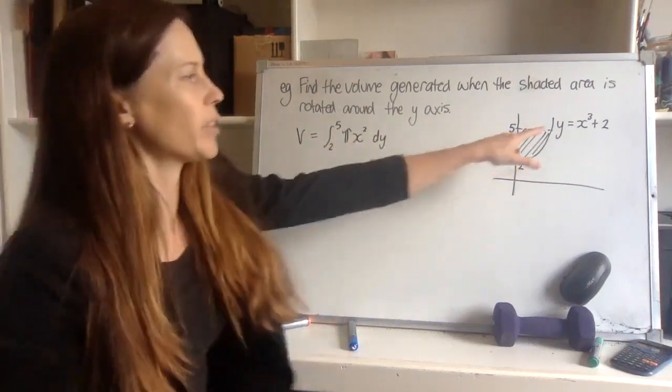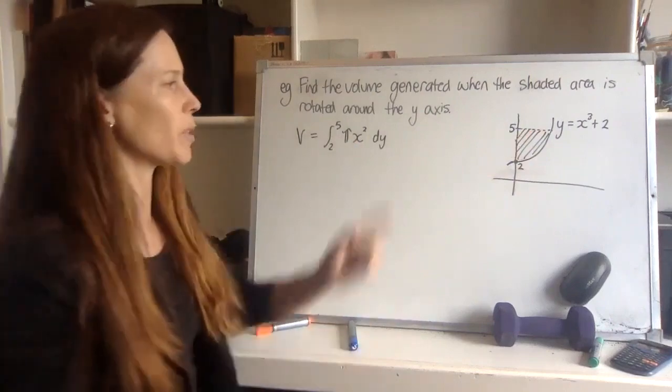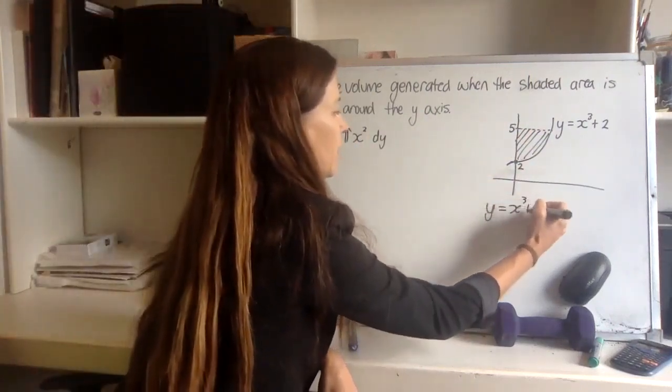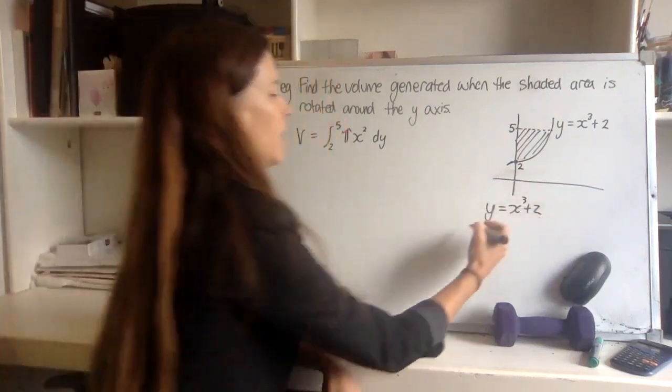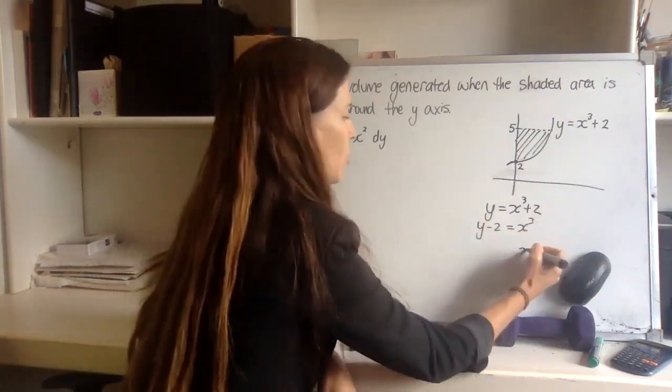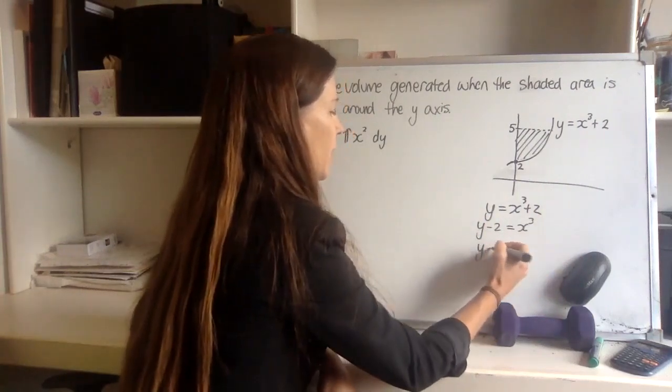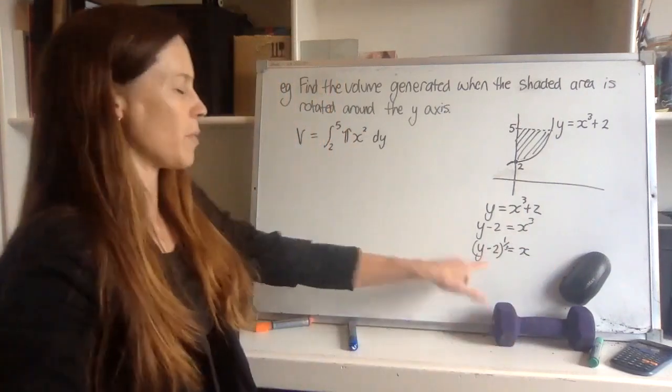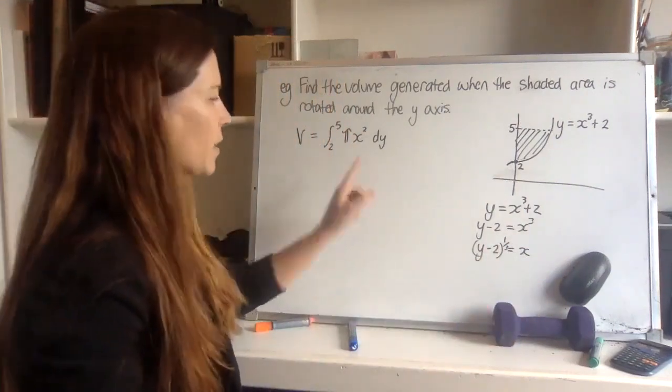Now to get x squared, we've got a little bit of work to do because our formula is not arranged correctly. So write down your equation and then rearrange it. Let's subtract 2 from both sides, then let's take the cubed root of both sides, but instead of writing y minus 2 as the cubed root, let's write to the power of a third, because I'm keeping in mind what I'm going to do with it in a minute and I don't want thirds.